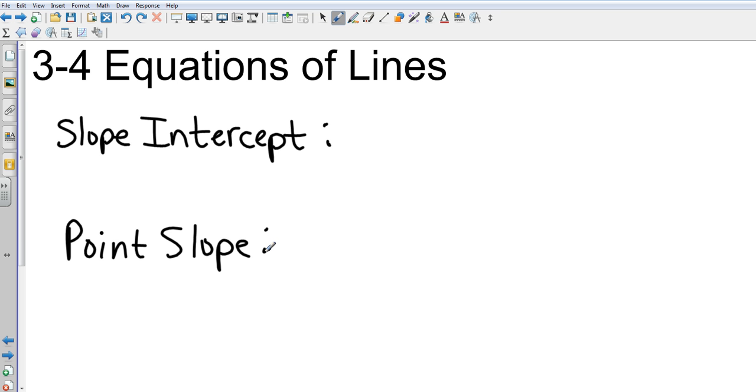We're going to start with the slope-intercept form, and that's when we're given a slope and a y-intercept. That form is y = mx + b. Recall that m equals the slope and b is the y-intercept, or where it crosses the y-axis.